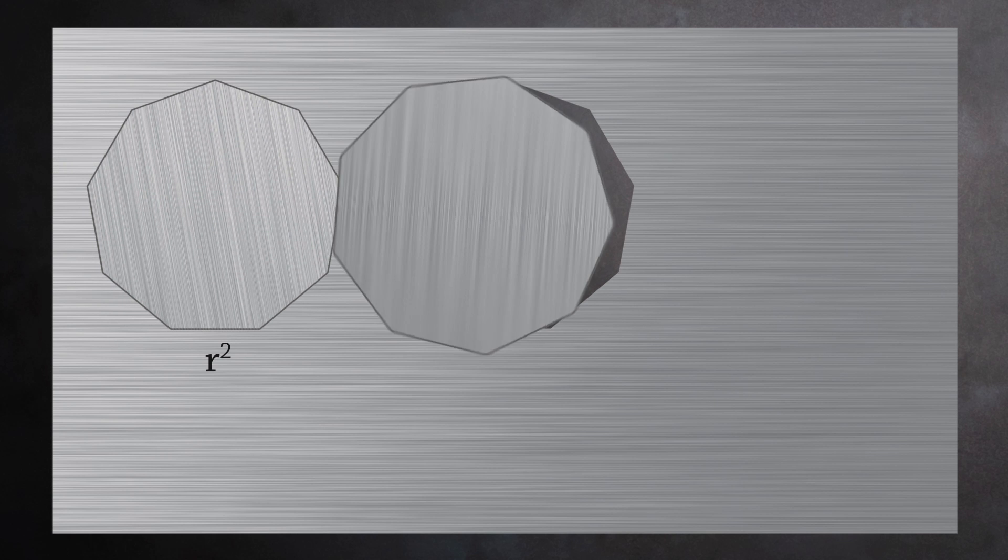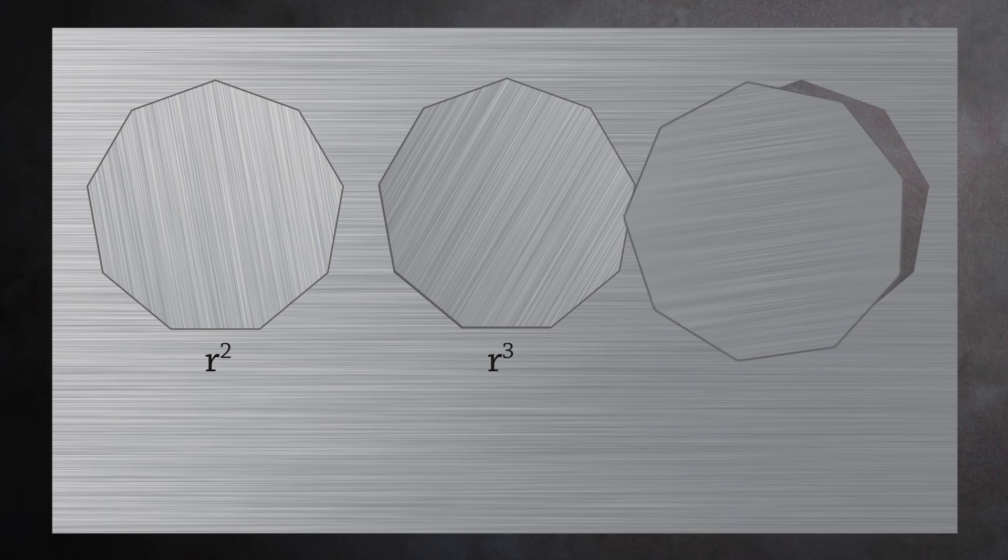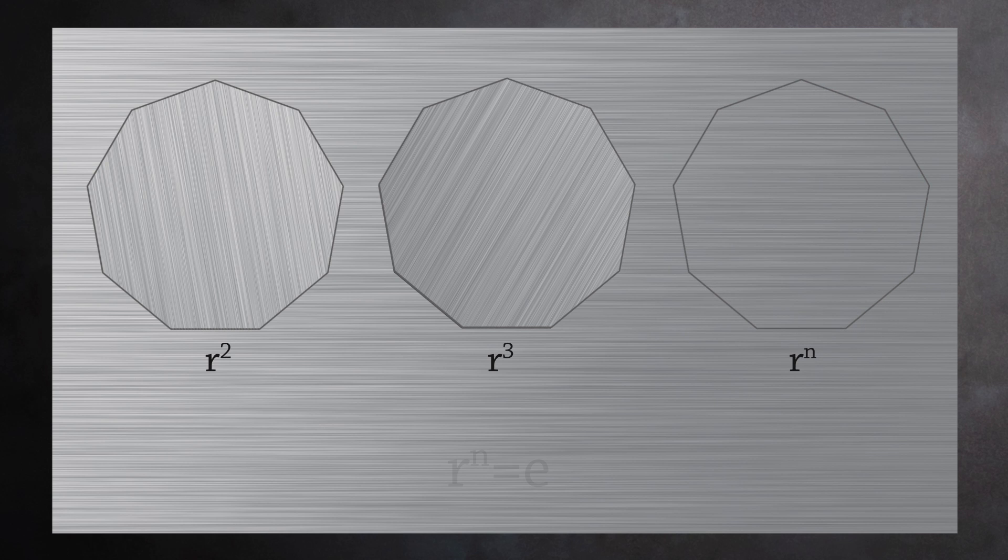Repeated applications of r give you other symmetries. Rotating the polygon twice is r squared. Rotating the polygon three times is r cubed, and so on. If you rotate the polygon n times, you return to the starting position. So r to the nth power is the identity element E.